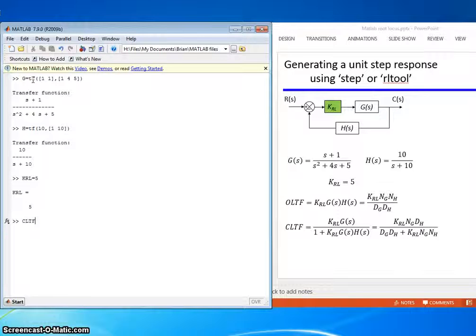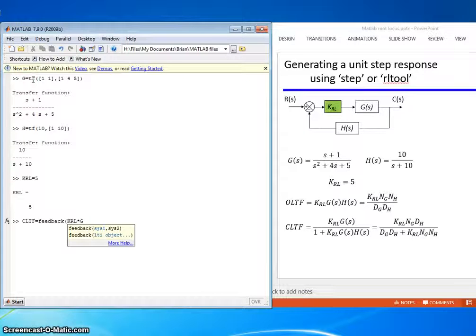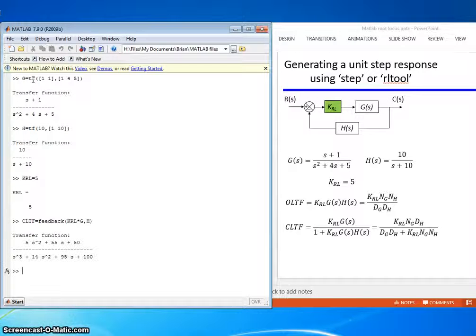All right, so the closed loop transfer function equals feedback, KRL times G, and then H is in the feedback loop. That's the closed loop transfer function with KRL equals 5 and G and H as given.